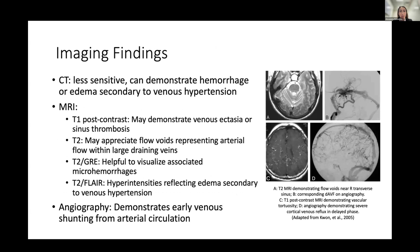There are a number of imaging findings associated with dural AV fistulas. CT is a less sensitive modality but is useful to demonstrate hemorrhage or edema secondary to venous hypertension. MRI provides more information: T1 post-contrast identifies venous ectasia or sinus thrombosis; T2 shows flow voids suggestive of fast arterial flow through large draining veins; gradient echo sequences identify micro-hemorrhage; and FLAIR shows hyperintensities associated with edema from venous hypertension. Angiography is the gold standard necessary for diagnosis, demonstrating early venous shunting.